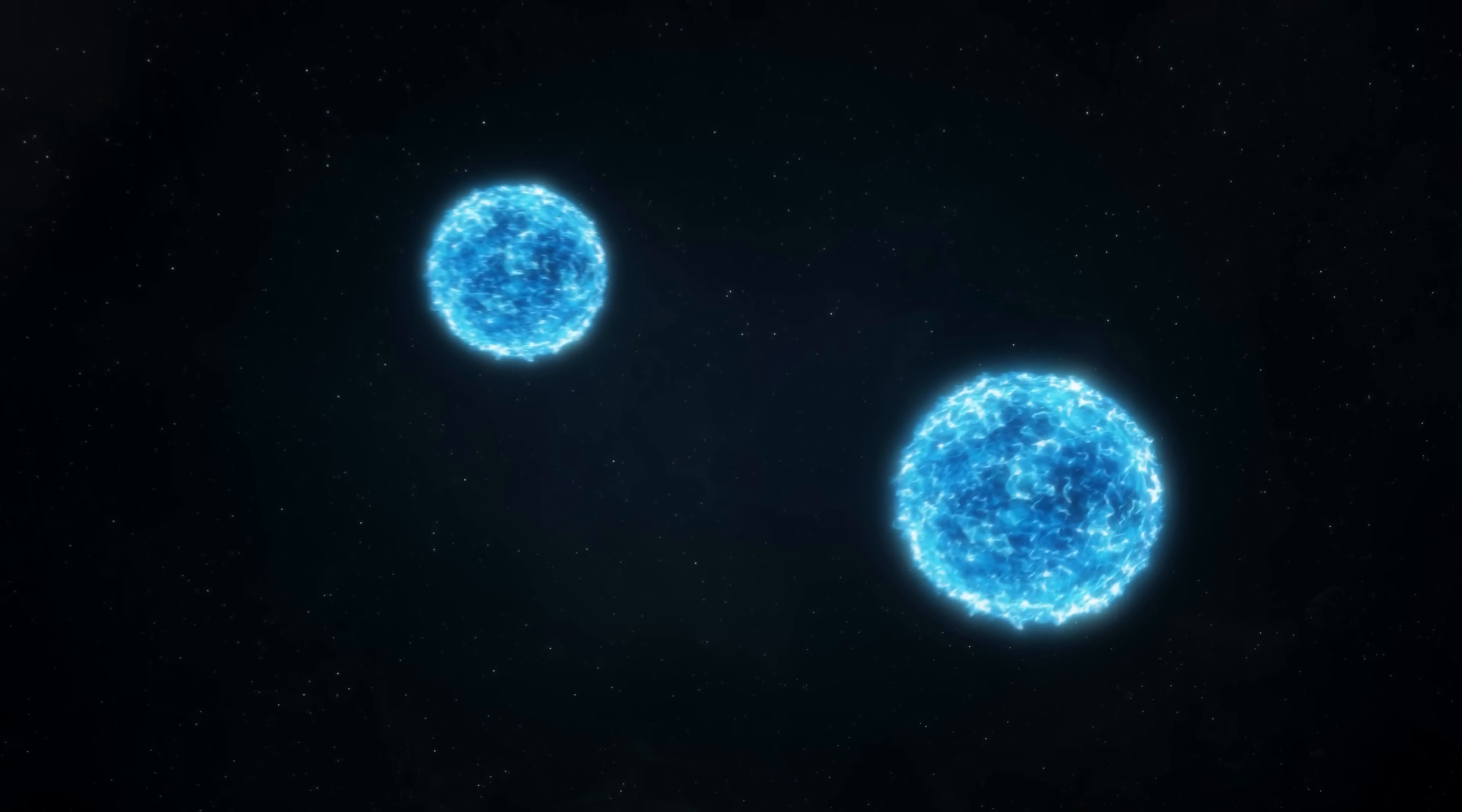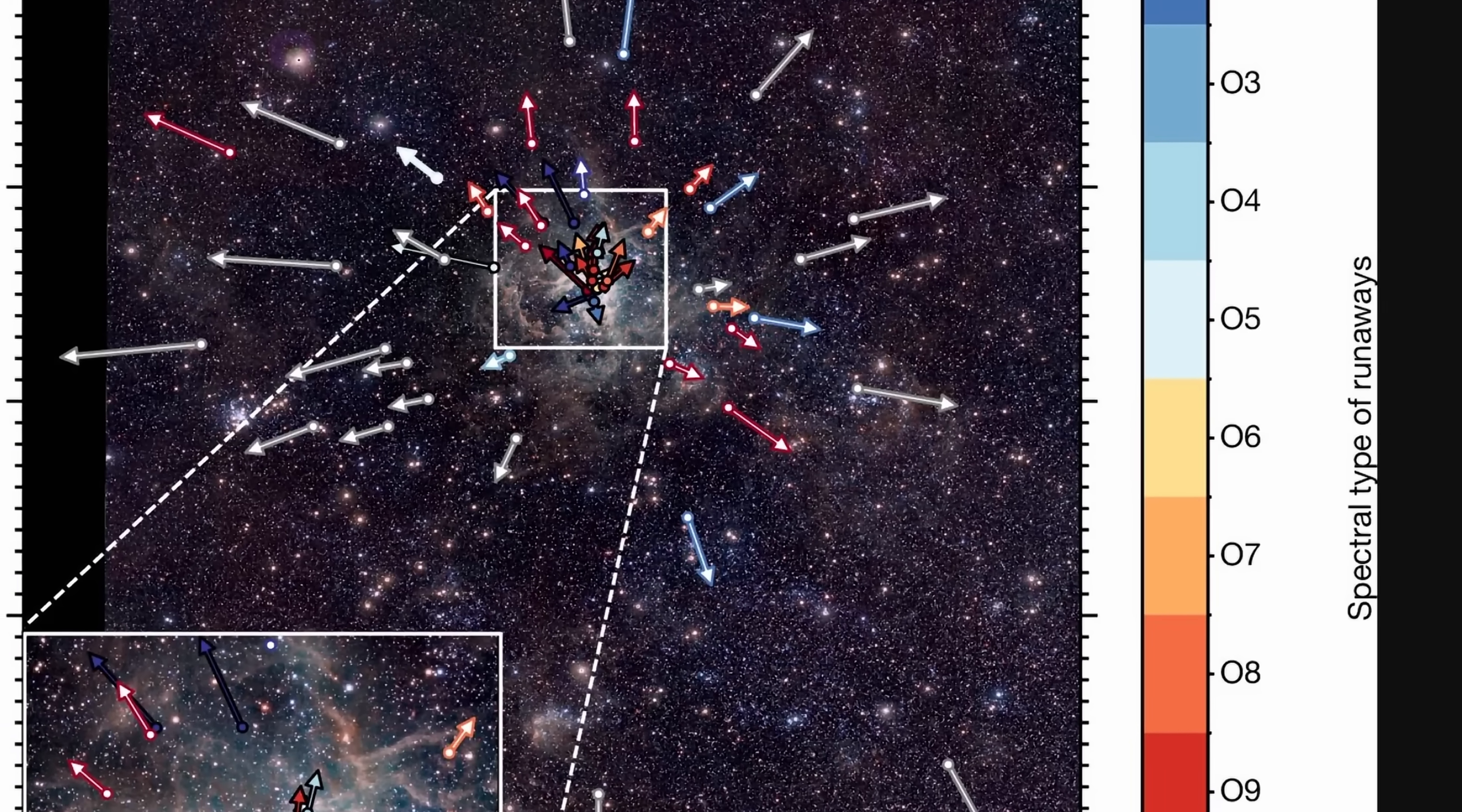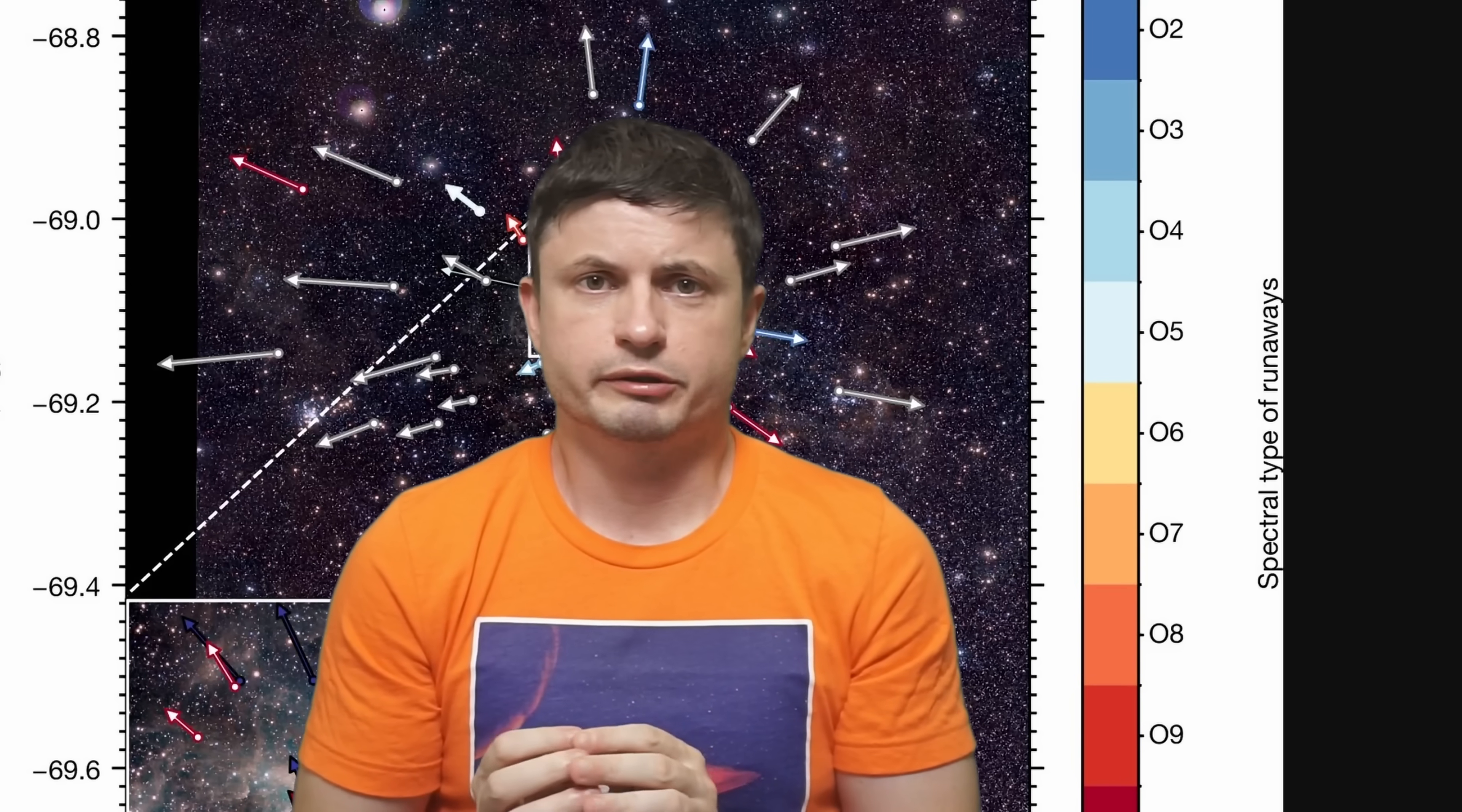Basically, even though we expect some stars to escape once in a while—for example because of near collisions, or because of complex triple and quadruple star interactions—absolutely nobody expected that it would be this many stars. By using the Gaia telescope, they uncovered 55 runaway stars, all moving away from the center and all escaping because of various interactions. Because here this is basically a third of all of the stars, by itself this was super unexpected.